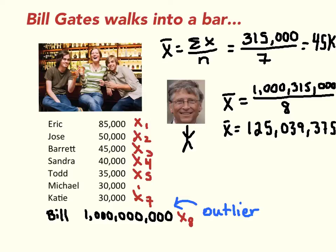In general, when you have an outlier in your sample — an extreme value on the dimension you're measuring — the mean is not a good measure, because the outlier will pull the mean to the extreme and therefore the mean will not be a good representation of the overall sample. The joke is that Bill Gates walks into a bar and suddenly everyone in the bar is a millionaire, which is obviously not true.